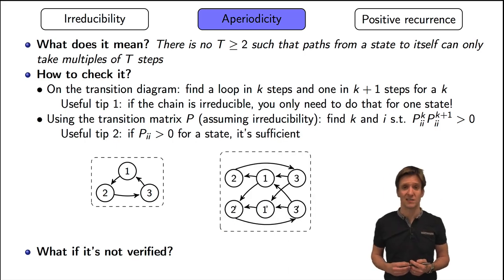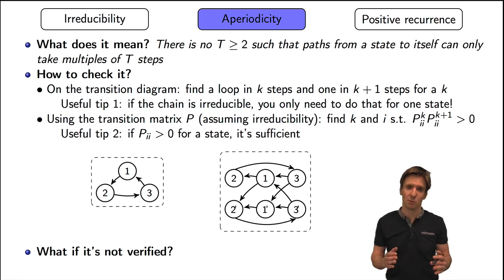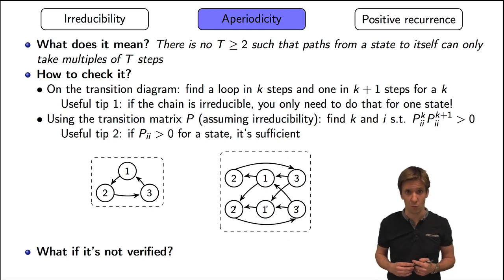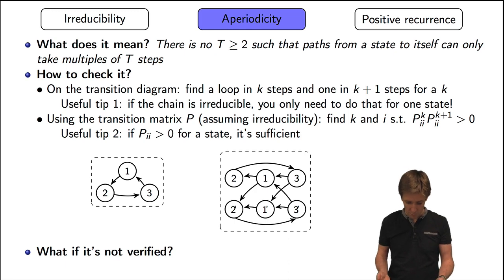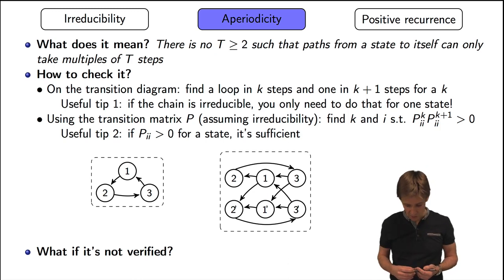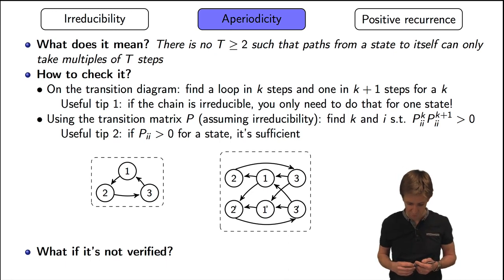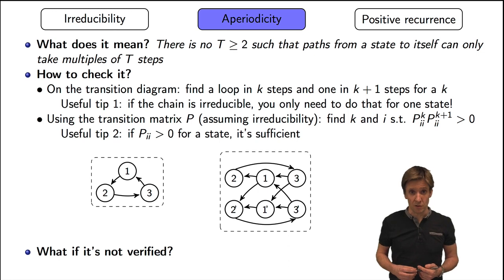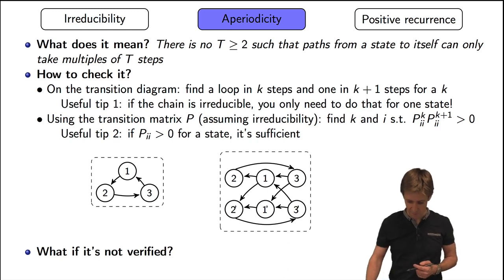What about that one? It looks less obvious, but we have labeled the states to make it appear more clearly that it's also periodic with period three. From state one, we can only loop in three or six or nine steps. Because from state one we can only go to a state labeled two or two-prime; from states two or two-prime, we can only go to a state labeled three or three-prime; and from three or three-prime, we can only go to one or one-prime. So loops can only take a multiple of three steps.